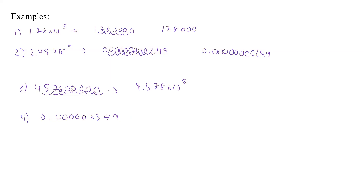What about 0.00002349? We know the decimal needs to be placed to get a number between 1 and 9, so it's 2.349 times 10. Since when we get back to the original we'd have to go left, that's a negative. We count the spaces: 1, 2, 3, 4, 5, 6 — six spaces. So that's 2.349 times 10 to the minus 6. Positive exponents move it right, negative exponents move it left that many spaces.